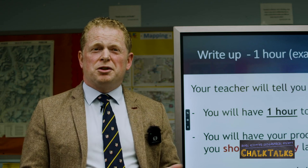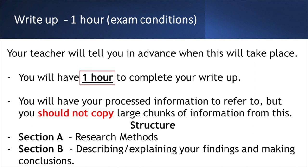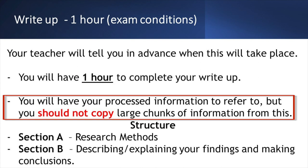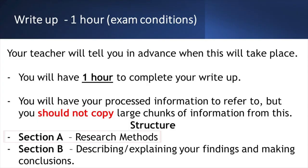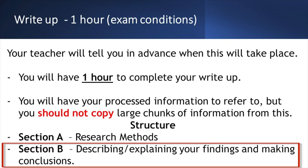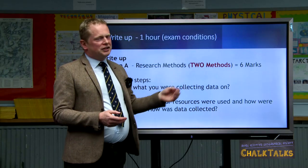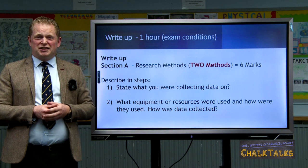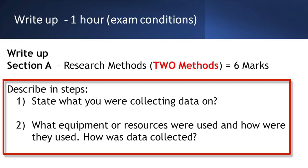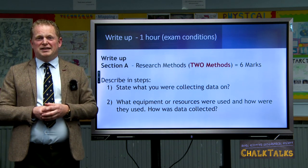Once you've completed your processed information, your teacher will have told you well in advance when the assessment is due to take place. You have a total of one hour to complete your final write-up. Make sure you have your processed information with you but do not copy large chunks from it. The structure of the assessment is split into two sections: Section A is your account of the research methods you've used, while Section B is your description, explanation, and conclusions based on your researched question or topic. During the research phase, keep a note of exactly what you did and when, as your write-up may be several weeks or months in the future.